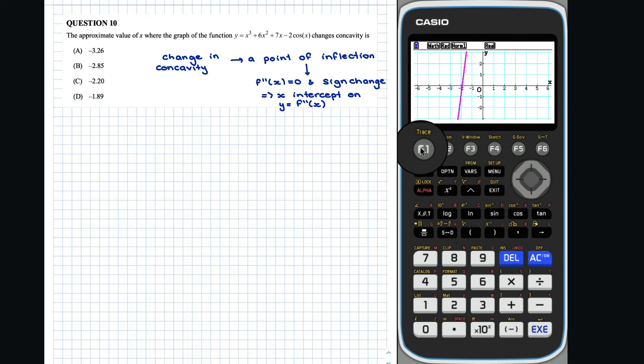We now need to find the x-intercept, which can be done using the root button. Therefore, the correct answer is negative 1.89, option D.